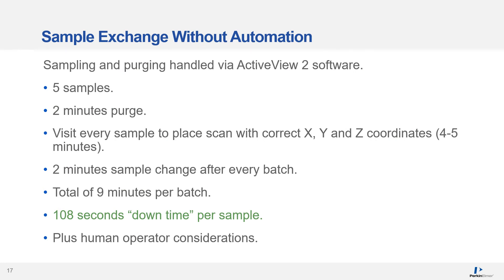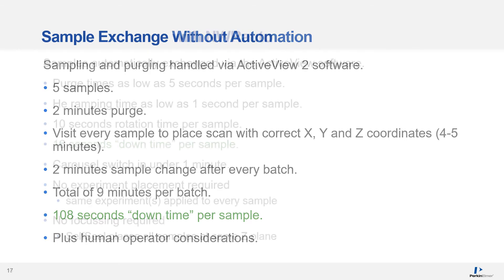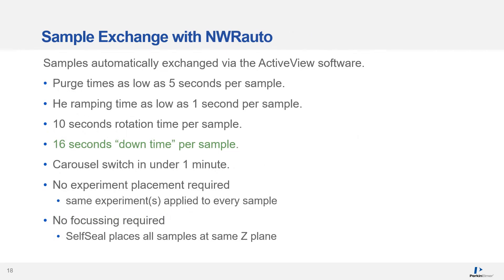If we review the process without sample animation, you can see that switching out the chamber has a drastic effect on sample throughput. With the NWR Auto and the automation of the sample introduction, sample throughput is increased by a factor of 10, and operator involvement is significantly reduced.